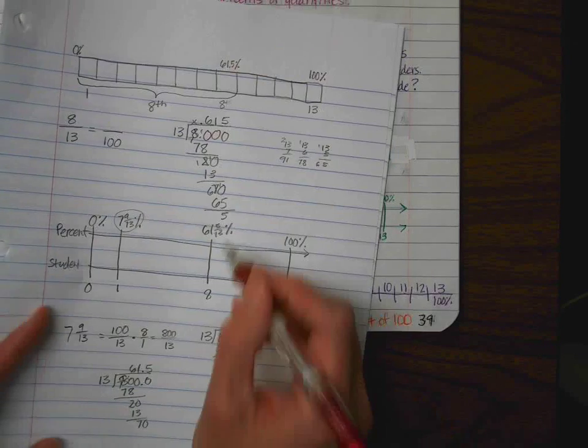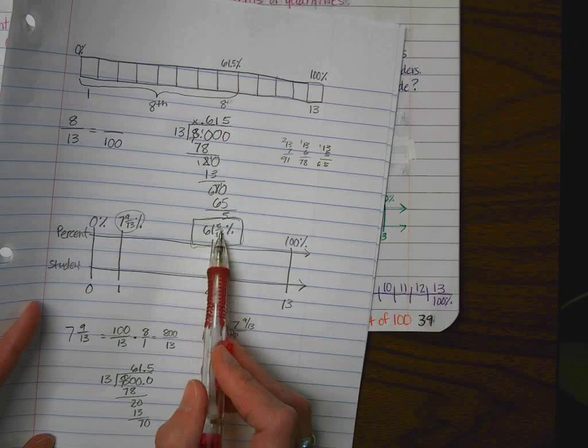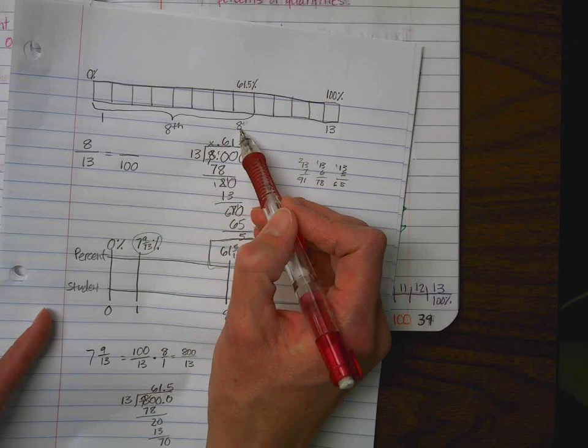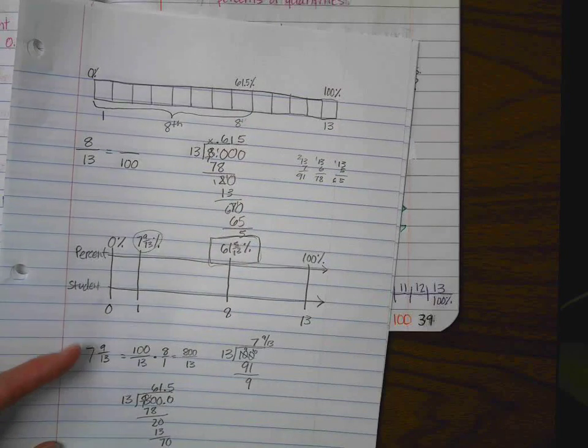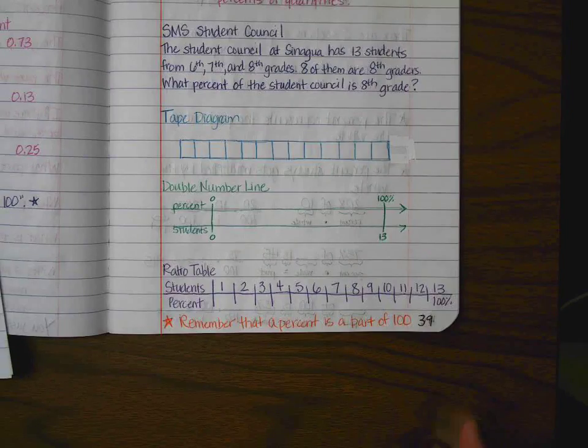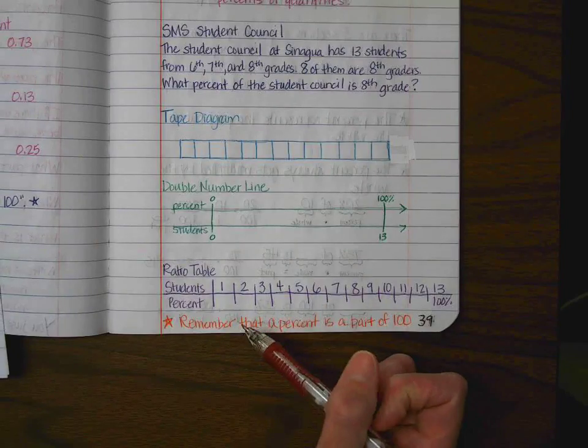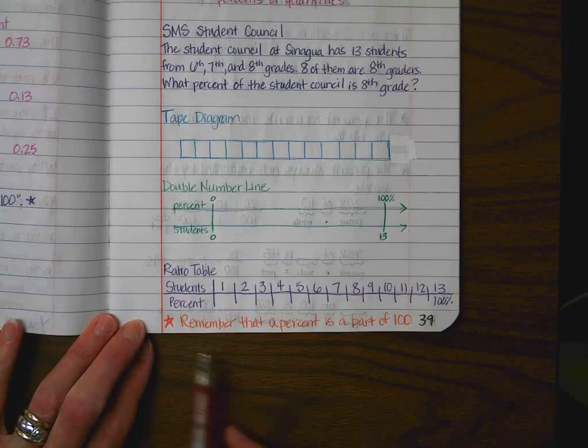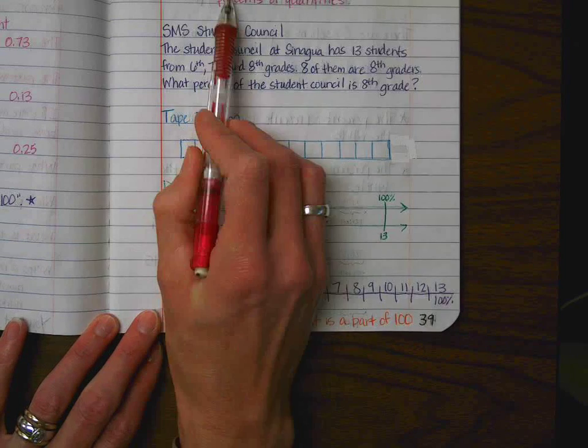Okay? So, using tools to help you figure it out. What we came to the conclusion is that the total number of eighth graders on student council makes up 61 and five thirteenths percent. So, eight student council members in eighth grade is 61 and a half percent about. I will be giving you some practice problems of using these little tape diagrams, double number lines, and ratio tables on the board in the morning. So, make sure you look for that. The thing I want you to remember again in this lesson is remember that a percent is part of 100.